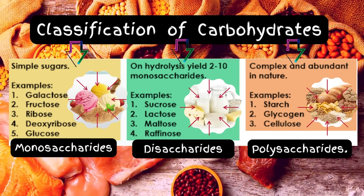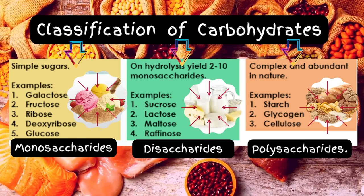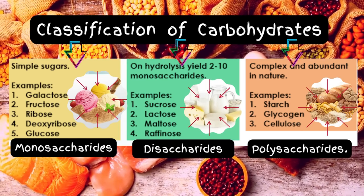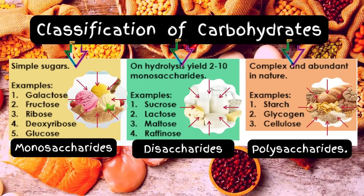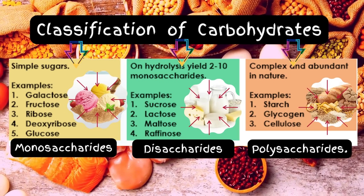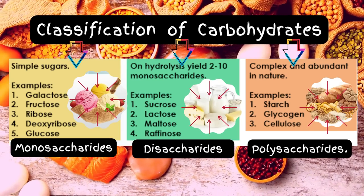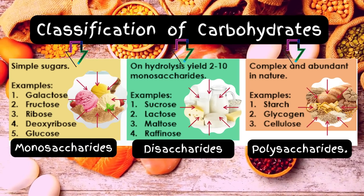Classification of carbohydrates: Monosaccharides — glucose, fructose, ribose, deoxyribose, galactose. Disaccharides — sucrose, lactose, maltose, raffinose. Polysaccharides — starch, cellulose, glycogen.